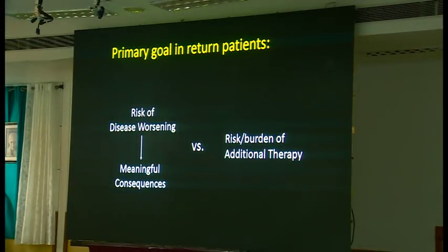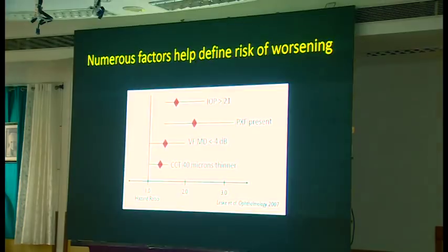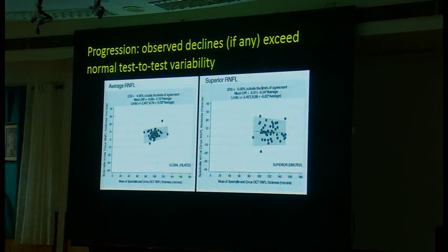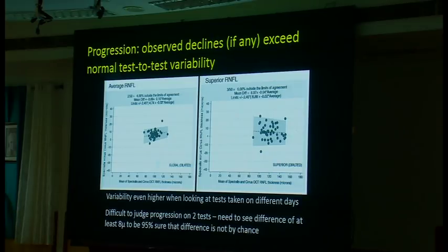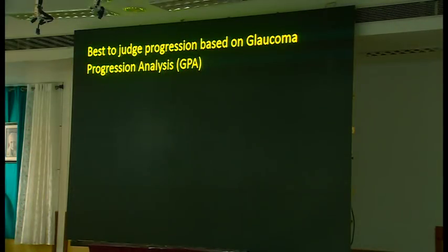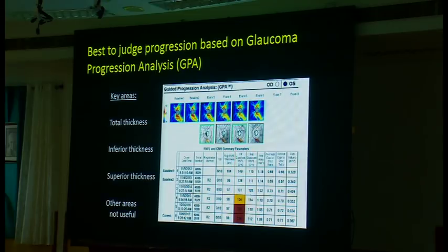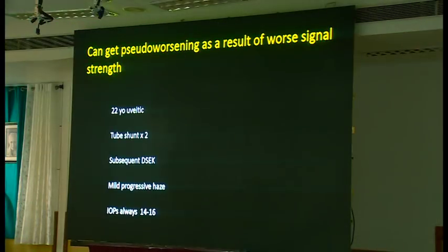In return patients we want to assess the risk of disease worsening against the risk of therapy. The best approach is to look at a series of tests, since variability between tests is about four microns for total thickness and eight microns for sector thickness — making it hard to be sure of progression without substantial change. The best way to judge progression is GPA, which shows color coding for possibly worse or definitely worse results. Pay attention to total thickness or regional thicknesses particularly; other areas tend not to be as useful.